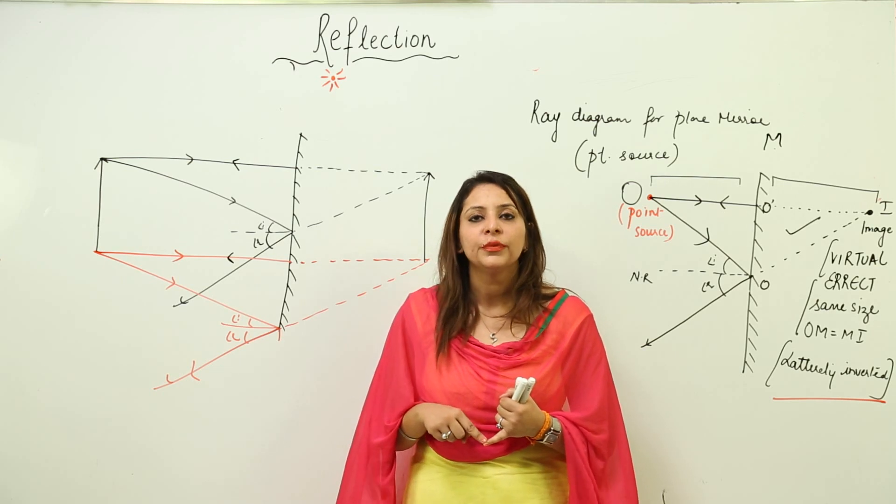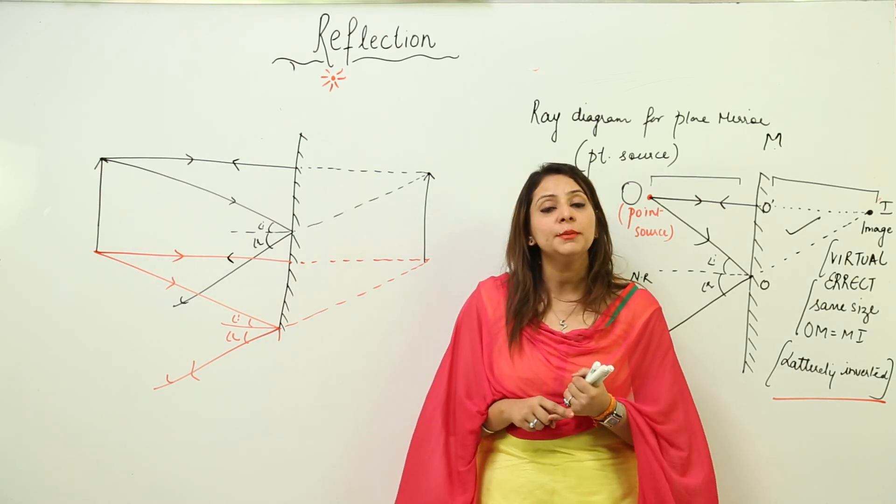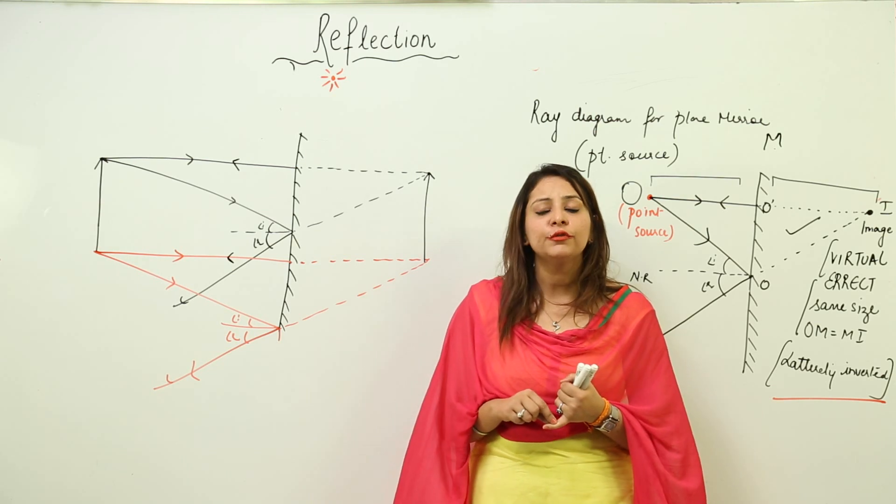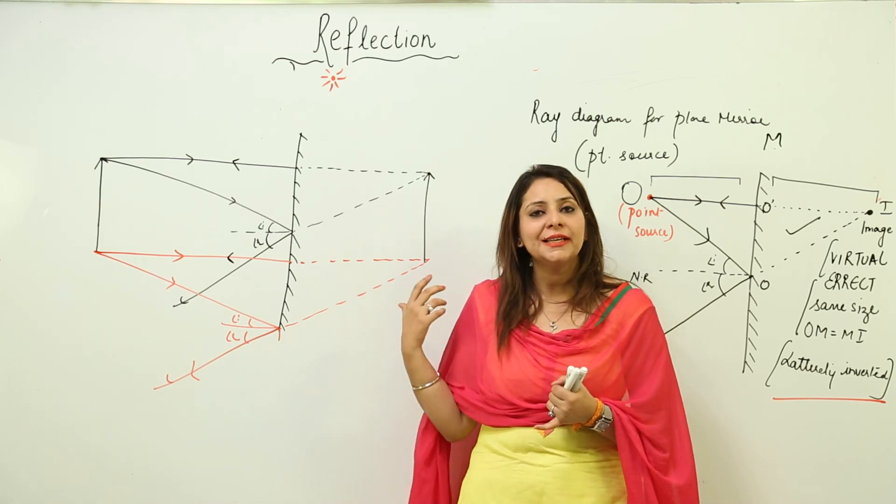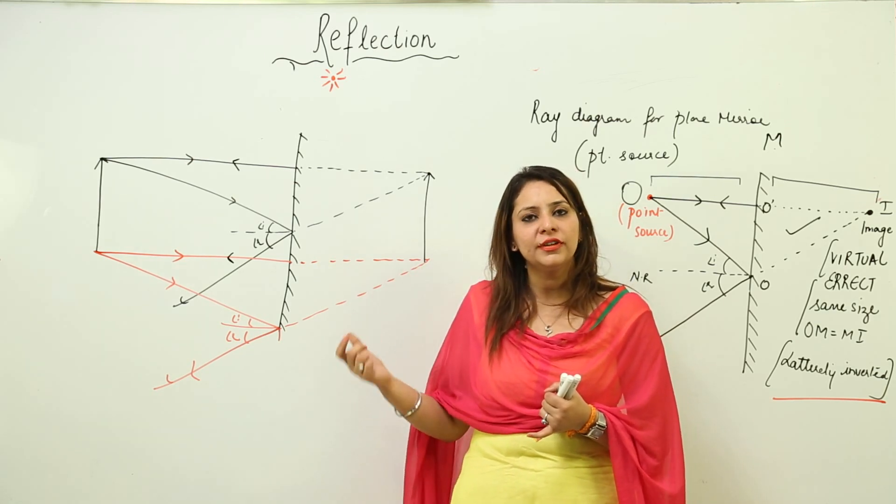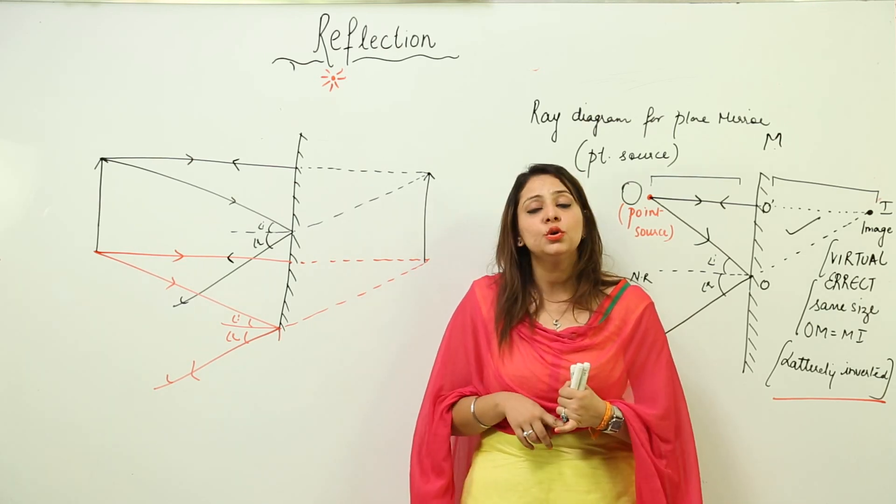It's used in a periscope, in a kaleidoscope, and in a solar cooker. In all three, it's being used as a reflector.